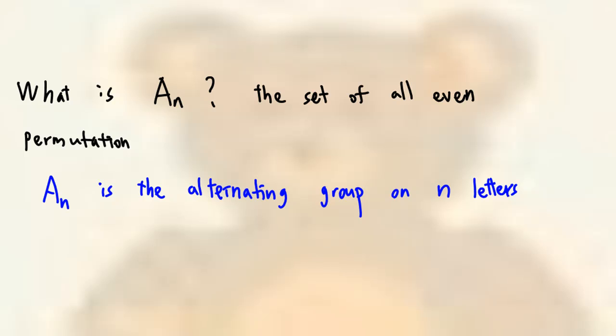What is A sub n? This is the set of all even permutations. We call A sub n the alternating group on n letters. Now, the claim is, for n greater than or equal to 2, A sub n has n factorial over 2 elements.